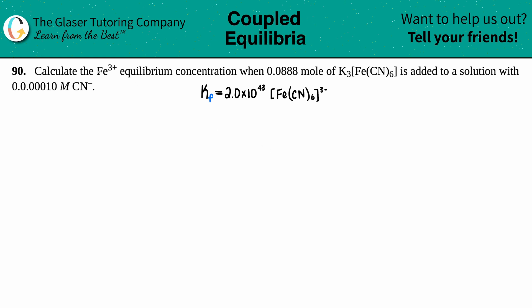Number 90: calculate the Fe³⁺ equilibrium concentration when 0.0888 moles of K₃Fe(CN)₆ is added to a solution with 0.00010 molarity of CN⁻. There appears to be a typo in the problem — the extra zero-dot is a mistake — so we just have 0.00010 molarity.